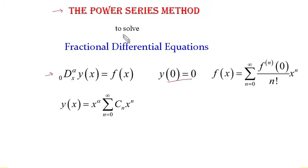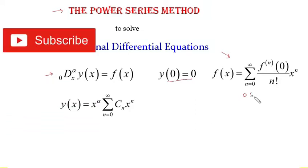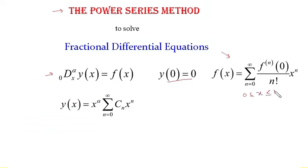Under this method I assume that the function f(x), which is a known function, can be written as a power series — a Taylor series near the point 0, or the Maclaurin series: the nth derivative of f at 0 over n factorial times x to the power n. Since this is a power series it must have some interval of convergence; assume x lies between 0 and some number R, and in this region the series is convergent.